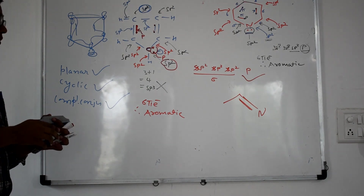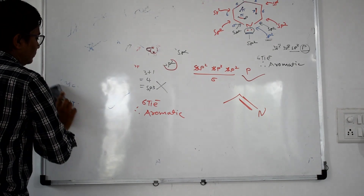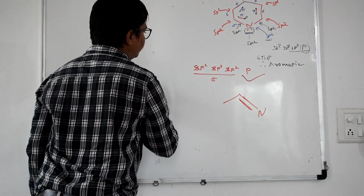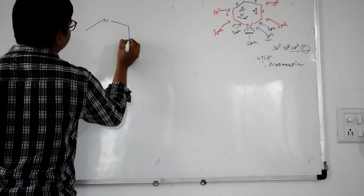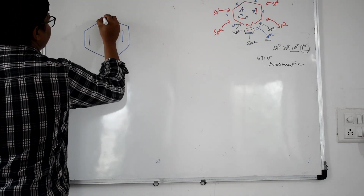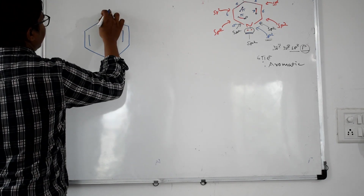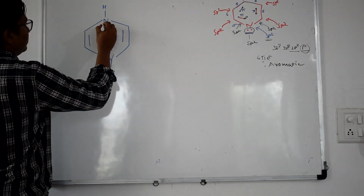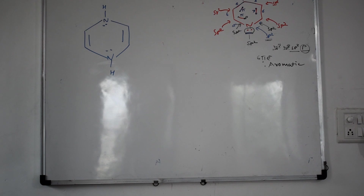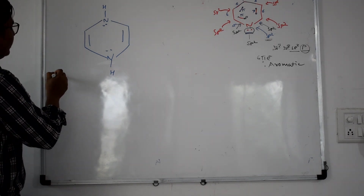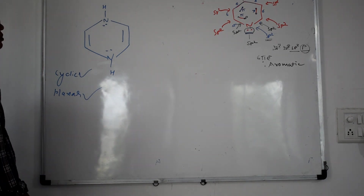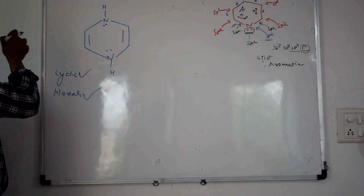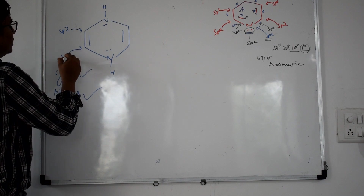Let us have another example. Consider this new molecule — is it aromatic, non-aromatic, or anti-aromatic? We go through the criteria: it is a cyclic compound, it is a planar compound. Now we need to check for complete conjugation — every atom in the ring should be sp2 hybridized. This is sp2, this is sp2...